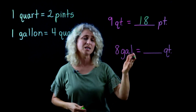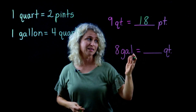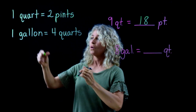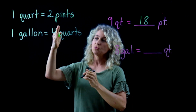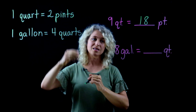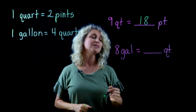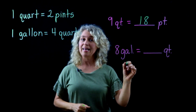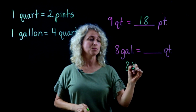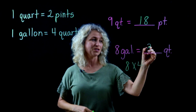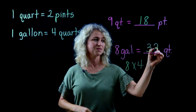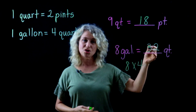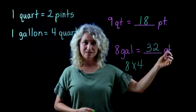The next one: 8 gallons to how many quarts? We know that there are 4 quarts in a gallon, so it's just 8 times 4, and that's 32. So 8 gallons equals 32 quarts.